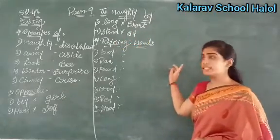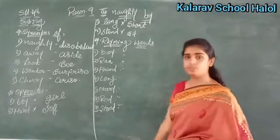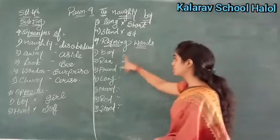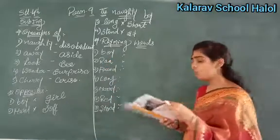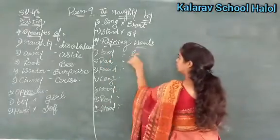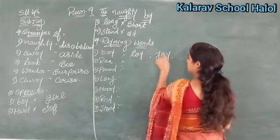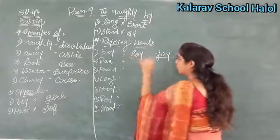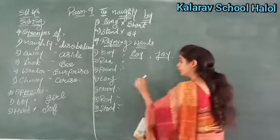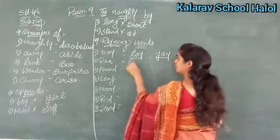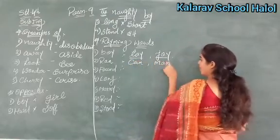Now see the next exercise. You have to write two rhyming words for the given word. Okay? So first it is given: boy. For boy — toy, joy. Yes or no? Clear? Now the second one: ren. So you can write: can, men. Okay?